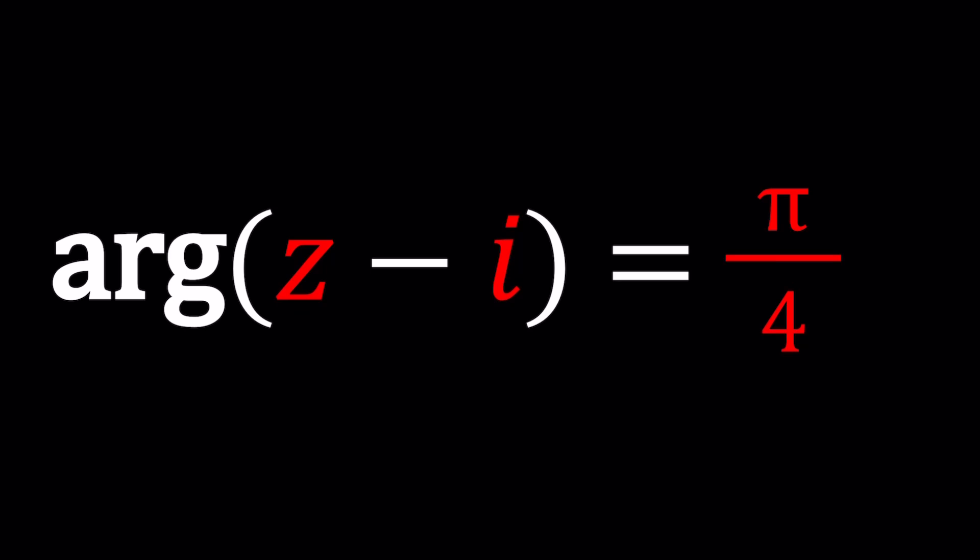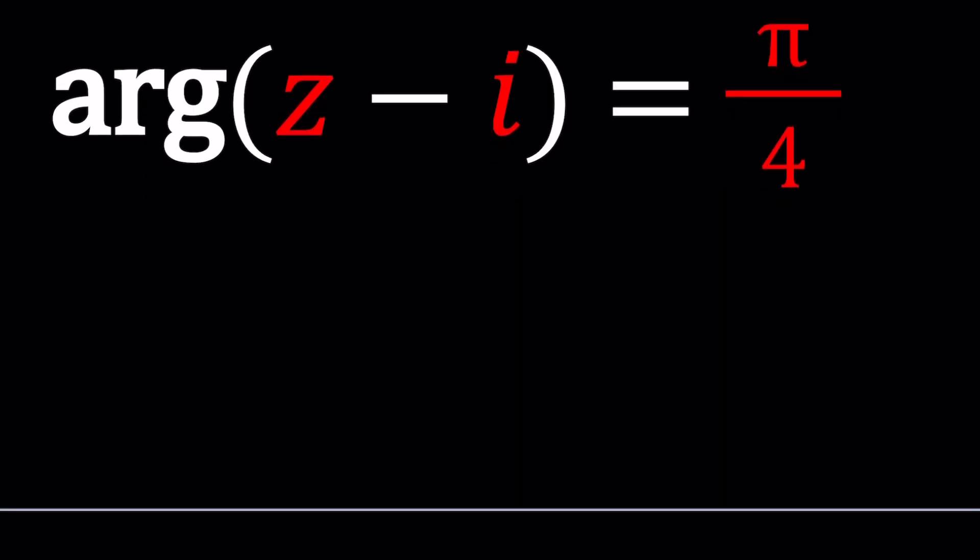Argument is basically the angle. When we have a complex number, we can plot it in the complex plane, which is also called the argand plane. An argand plane is just basically the xy plane, which is just kind of labeled differently.